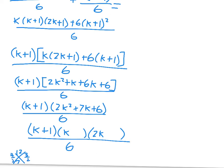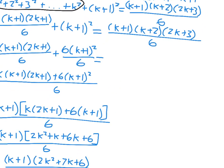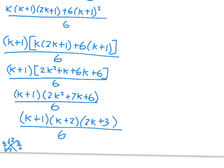So we end up with (k+1)(k+2)(2k+3) over 6, which is exactly what we wanted. The proof is done — signified by a filled-in box. To summarize: to prove something by induction, you show that it works when n equals 1, then you assume it works for n equals k, and then you show that it works for n equals k plus 1.